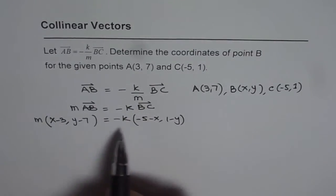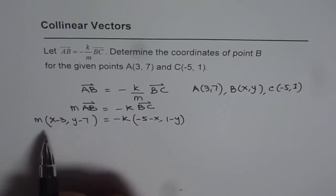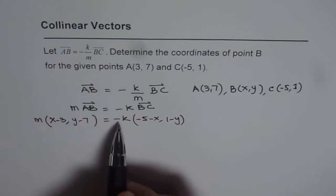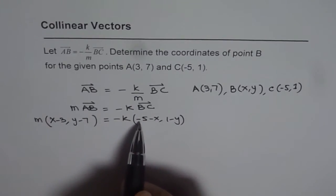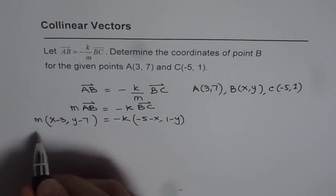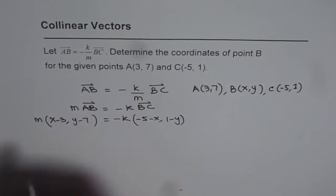Now we can combine X and Y terms. So X terms are M times (X minus 3), which should equal minus K times (-5 minus X). So we get one equation for X terms.